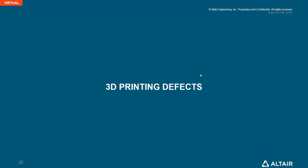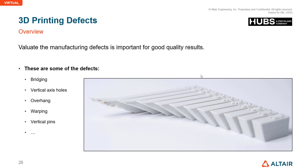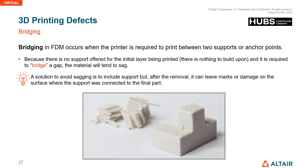Let's talk about 3D printing defects. Some of the most commonly known defects can cause quality issues in a part and make it look aesthetically poor. These include bridging, vertical axis holes, overhang issues, warping, and vertical pins.